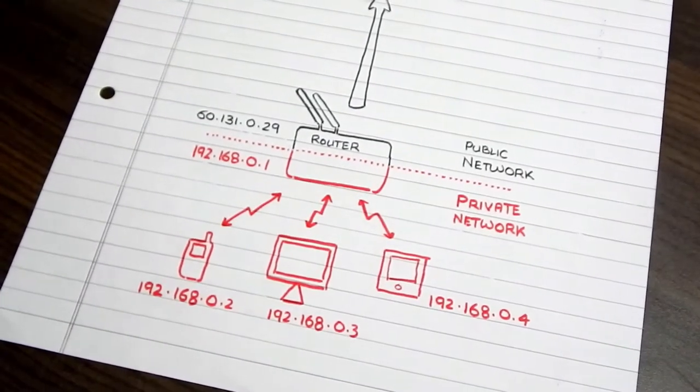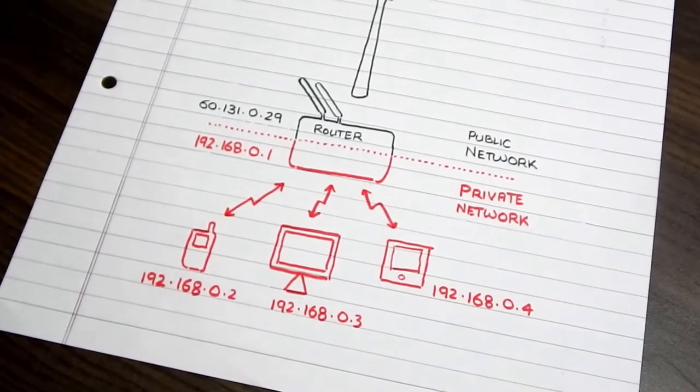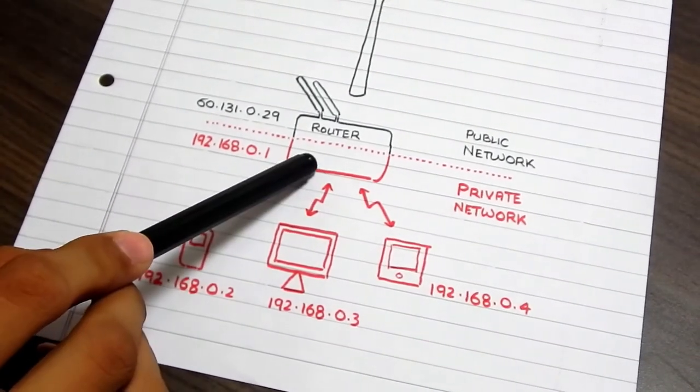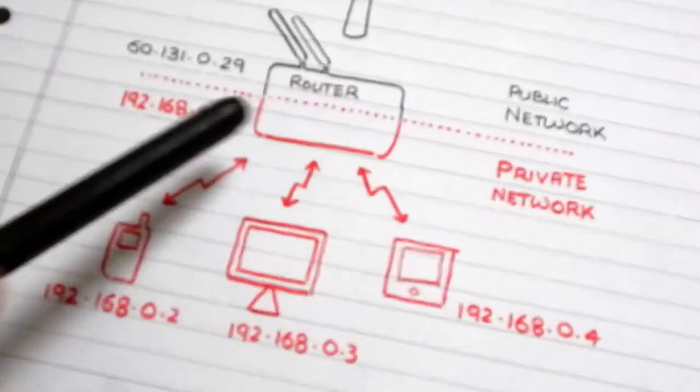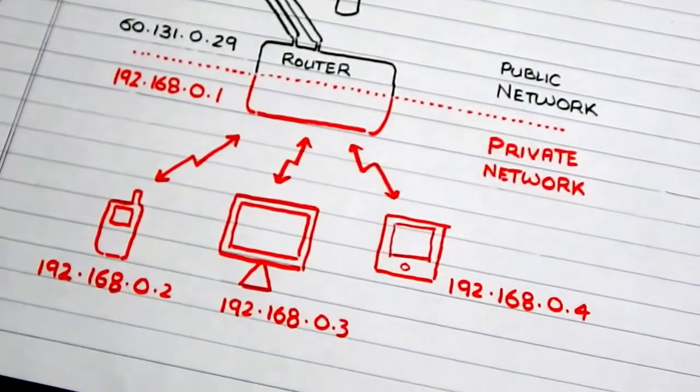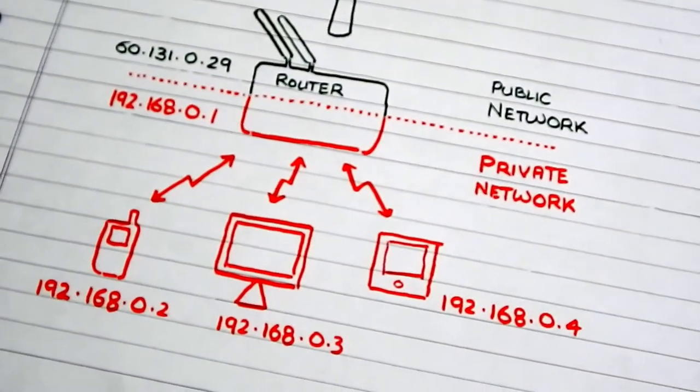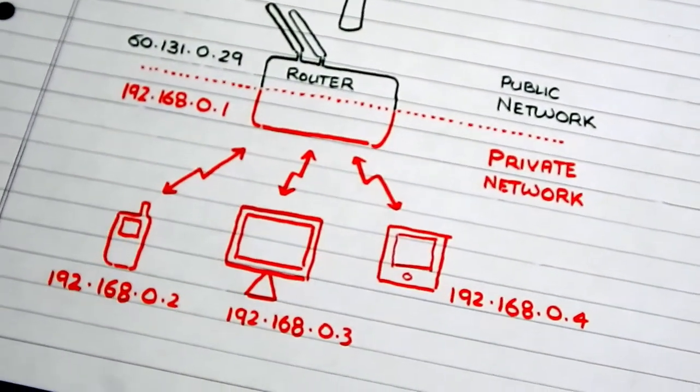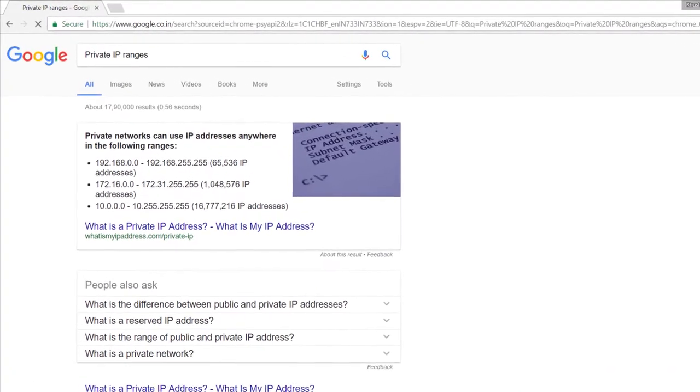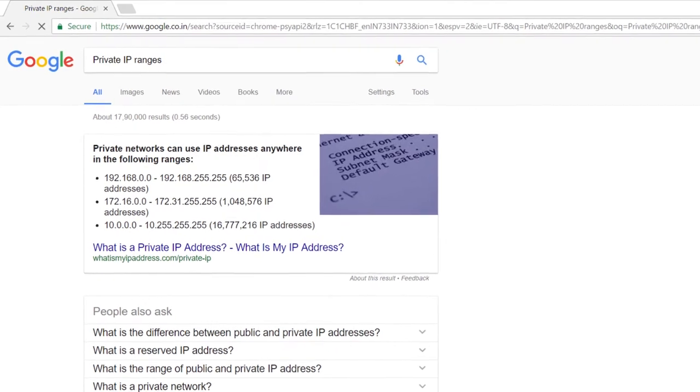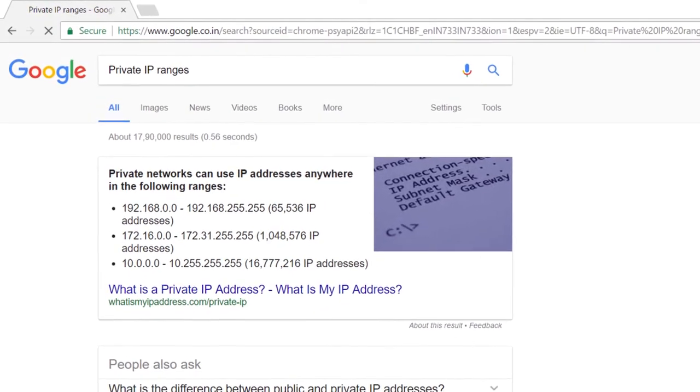So, what happens is, when your phone, say for example, wants to communicate with the internet, then it makes a request to the router at this address. The first address is occupied by the router. And the router on behalf of the phone will communicate with the internet, and whatever response is received, it will give it to the phone. This is called Network Address Translation. A quick search on Google shows you all the private IP ranges. The range starting from 192.168.0.0 is a very common IP range.